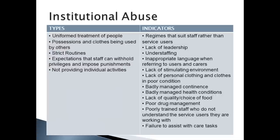Further indicators of organisational abuse include inappropriate language when referring to users and carers, lack of a stimulating environment, lack of personal clothing and clothes in poor condition, badly managed continence, badly managed health conditions, a lack of quality and choice of food, poor drug management, poorly trained staff who don't understand the service users they're working with, and failure to assist with care tasks.